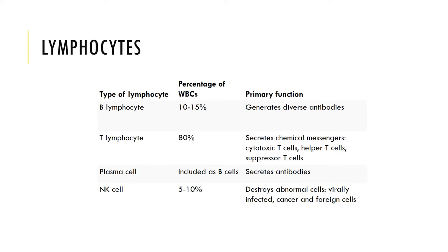T cells comprise about 80 percent of the circulating lymphocytes and provide cell-mediated immunity. NK cells, or natural killer cells, comprise about 5 to 10 percent of circulating lymphocytes. This group of lymphocytes is part of the body's nonspecific defenses and they attack foreign cells, body cells that have become infected with viruses, and cancer cells that appear in normal tissue. Their continuous monitoring of peripheral tissues has been called immunological surveillance.